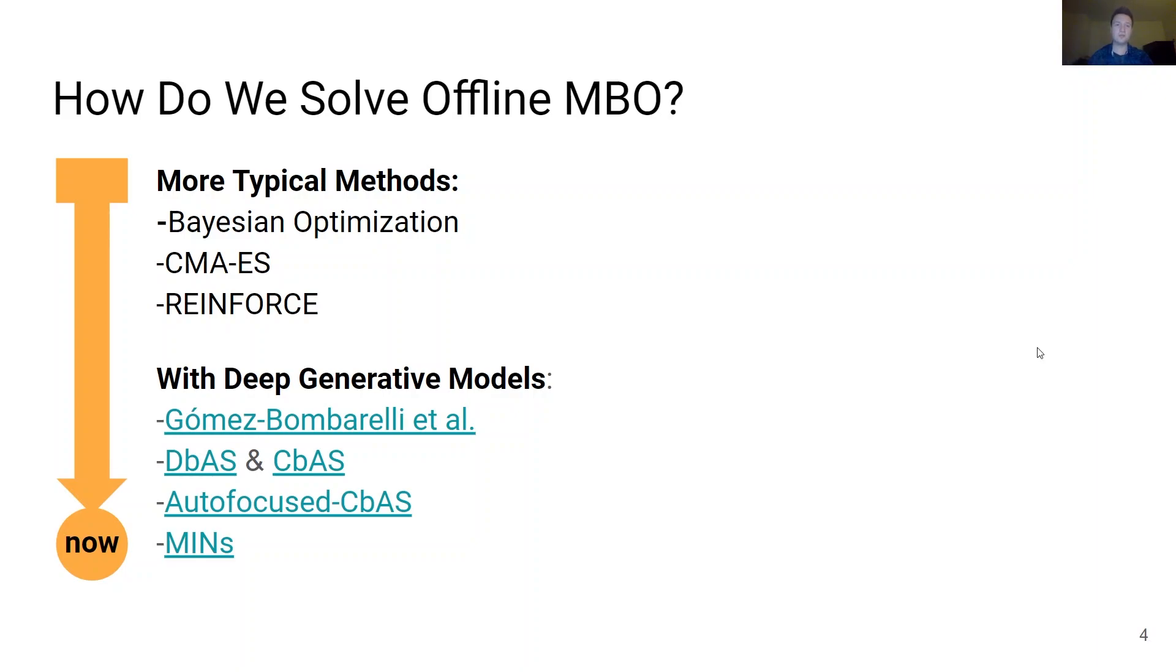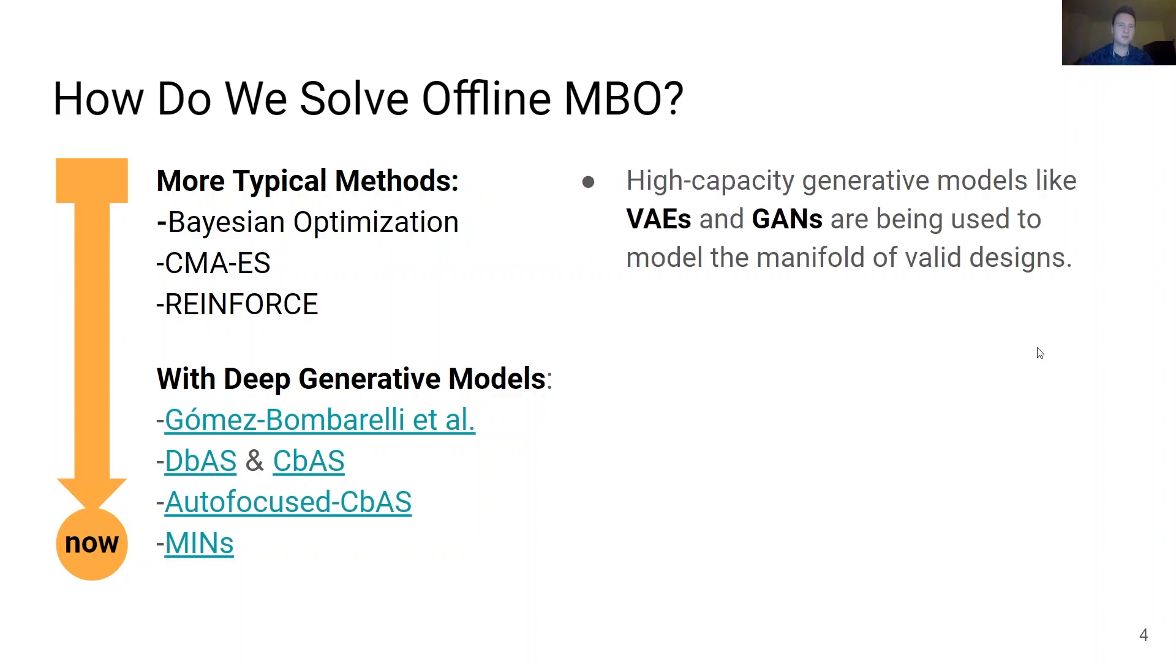What can we do to prevent the optimizer from being driven towards unseen inputs? An approach which has been studied in literature is utilizing deep generative models to estimate a manifold of valid designs that are not adversarial and then optimizing a learned model of the true objective function using this learned data manifold.